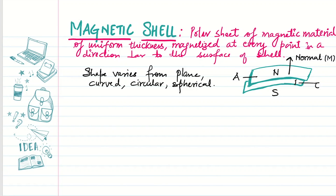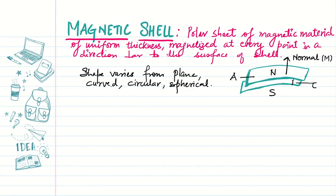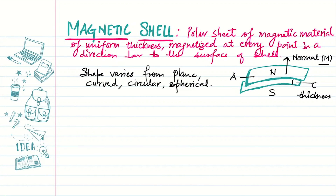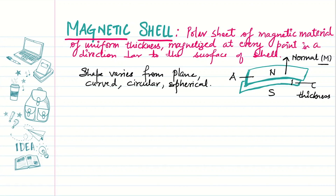Let's first understand what a magnetic shell is. It is basically a planar sheet of a magnetic material of uniform thickness, magnetized in the direction perpendicular to the surface of the shell. As you can see, the top surface of the shell has north polarity and the other has south polarity. Tau is the thickness, A is the area, and this is the normal to the surface — the direction of magnetization, capital M. The shape of the sheet can be plain, curved, circular, or even a spherical shell.